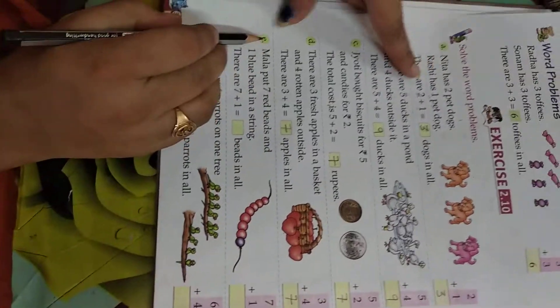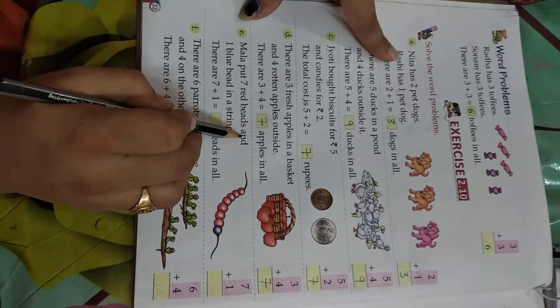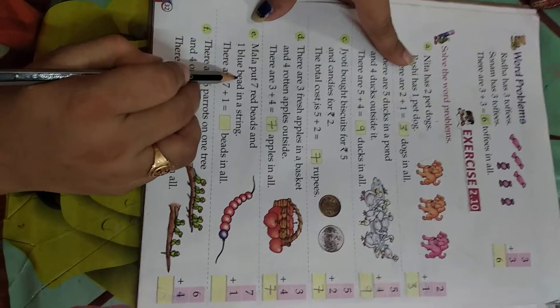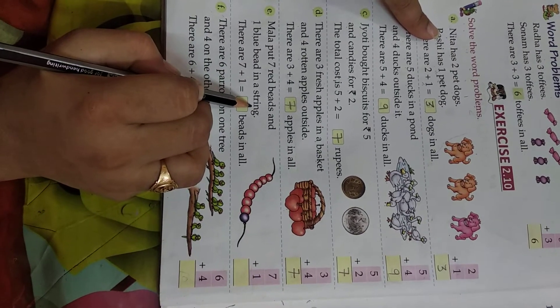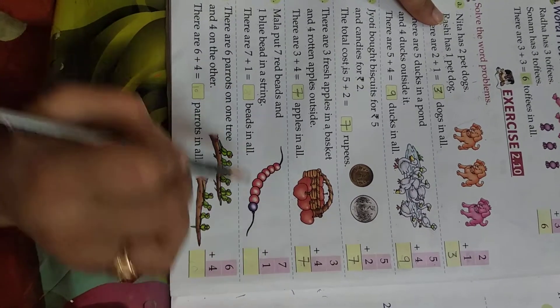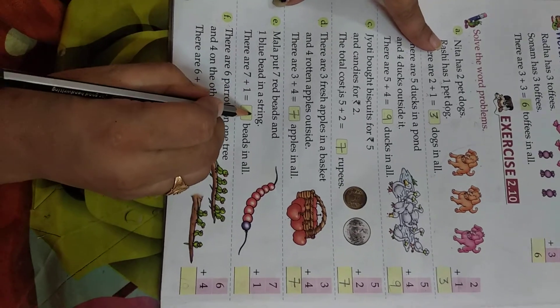Now, E. Mala put seven red beads and one blue bead in a string. So how many beads are in the string? Seven plus one is equal to eight.